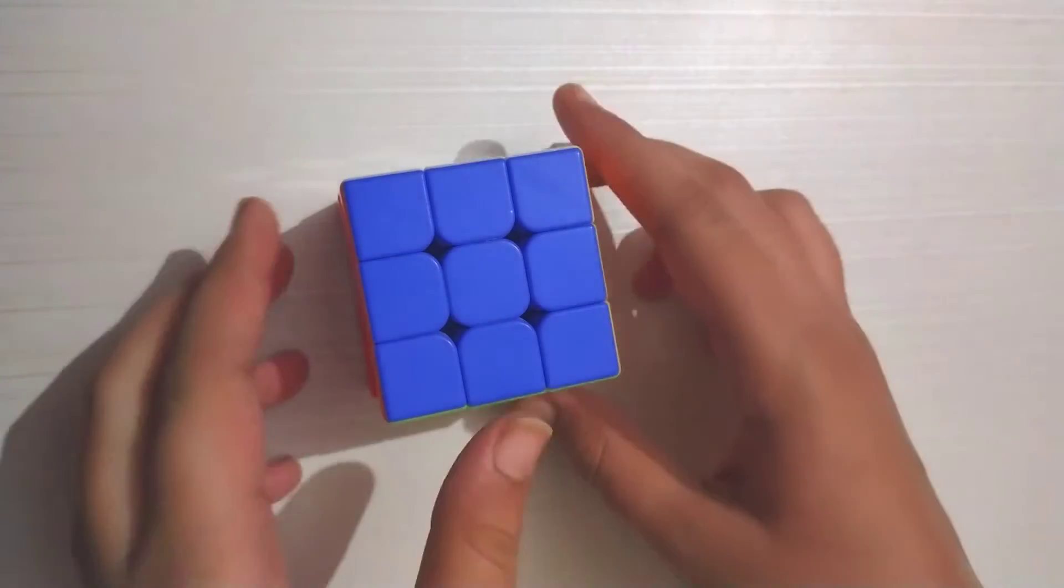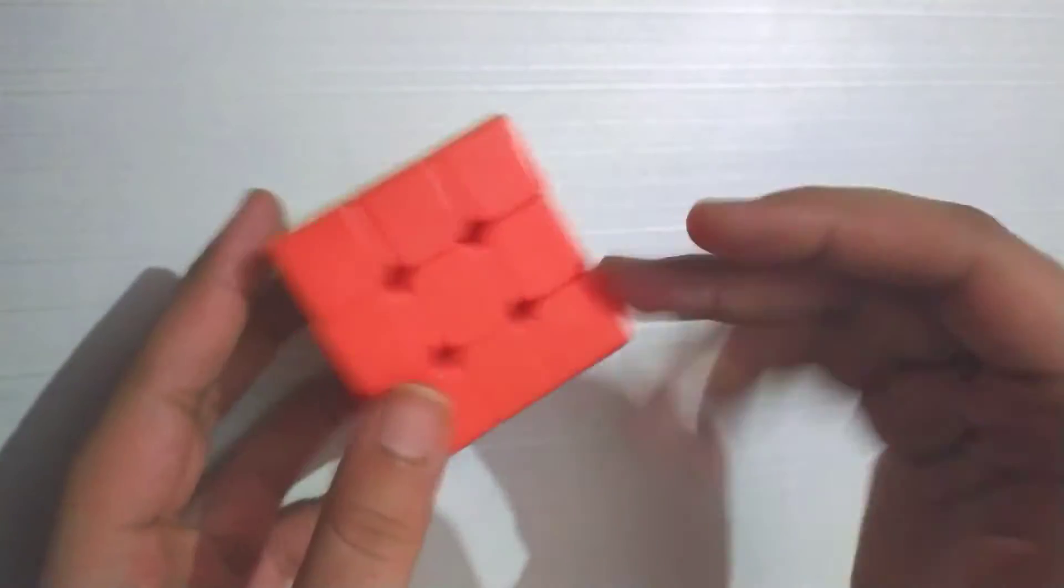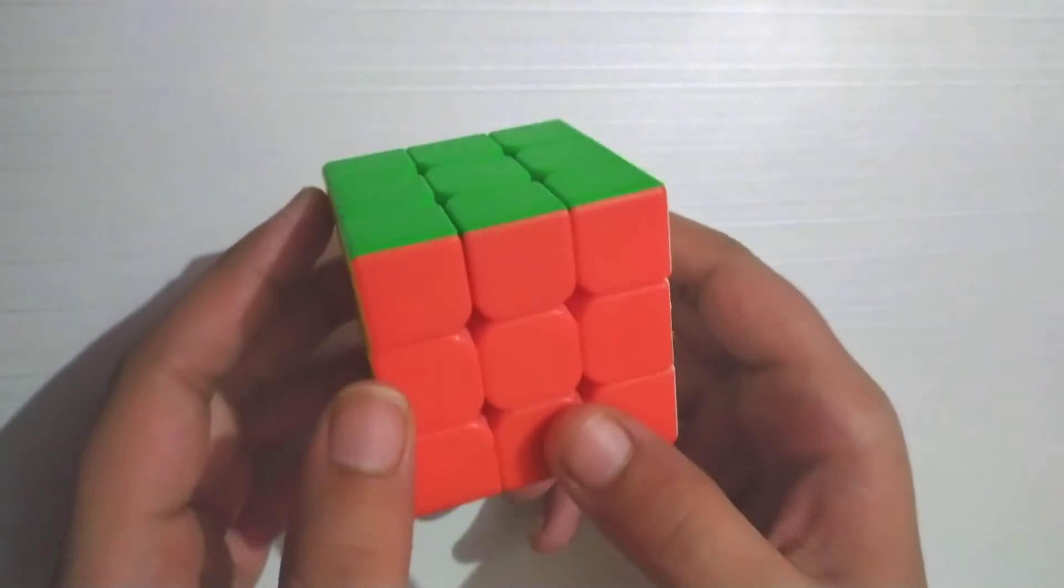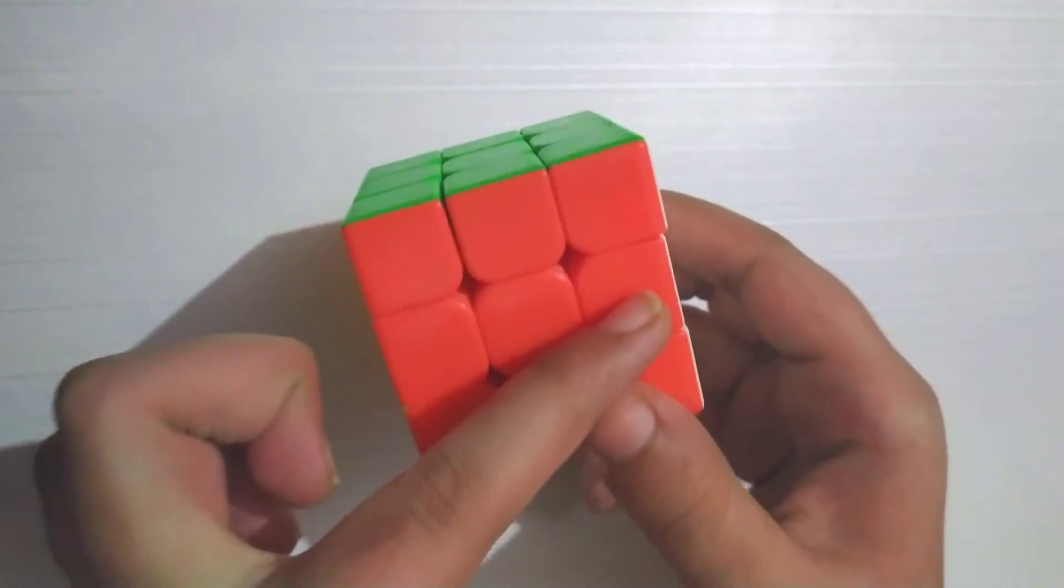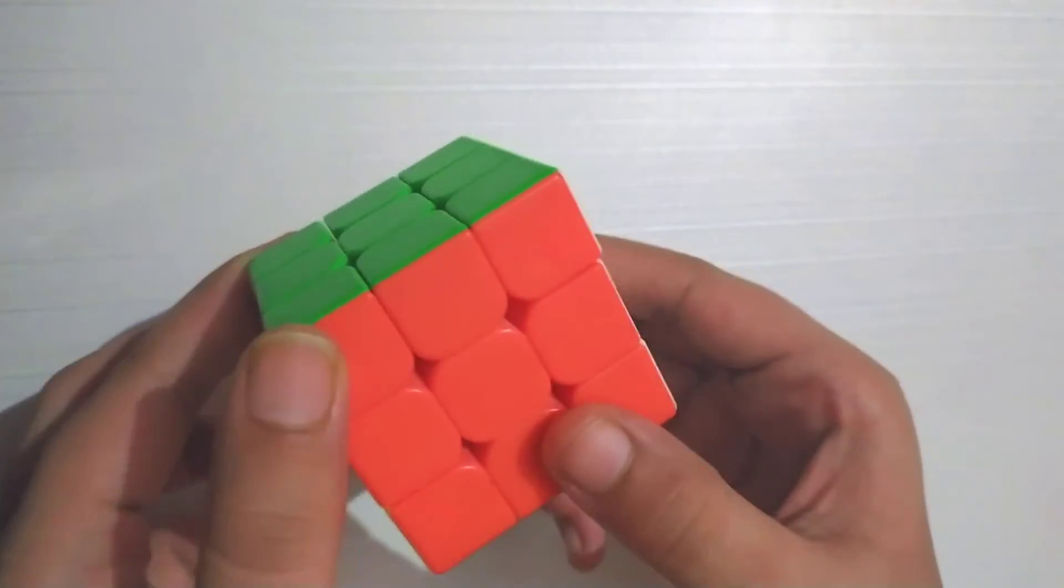So guys, for making donut pattern we will take any color of the cube. I will take red, so you will look good to see it. First we will move this slanting line to the left side like this.